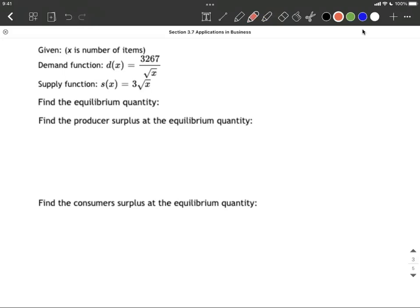So as we get going on this, first let's go ahead and set these equal to each other to help us find that equilibrium quantity and then the point. So 3267 divided by the square root of x is going to be set equal to 3 times the square root of x.